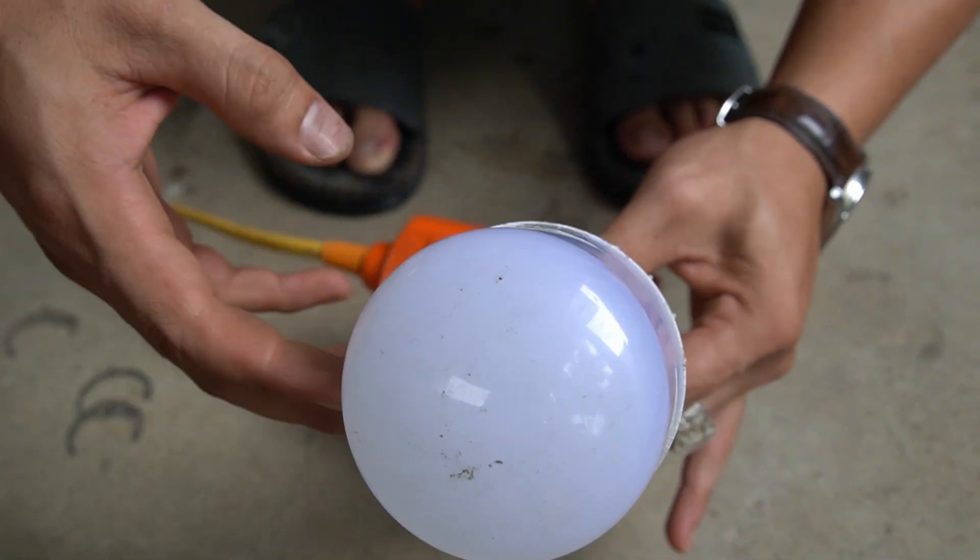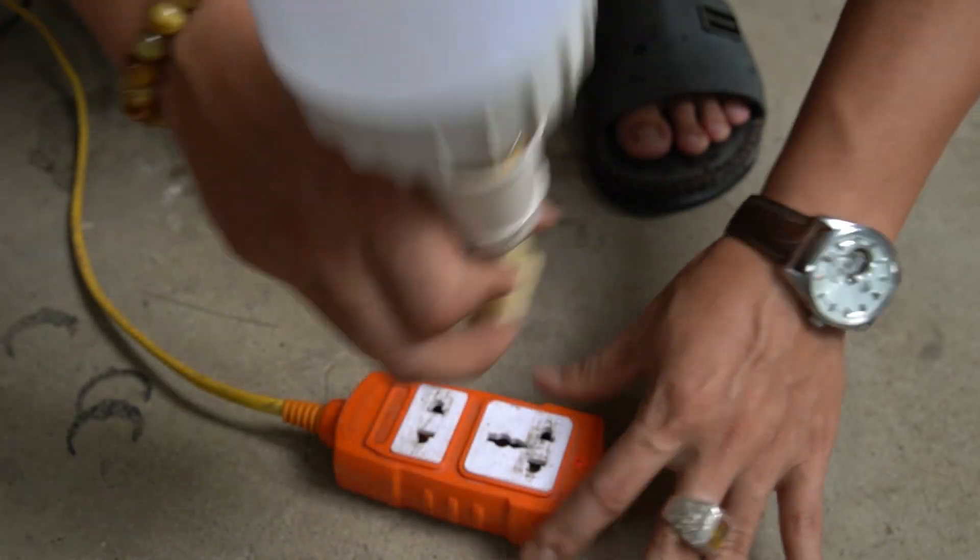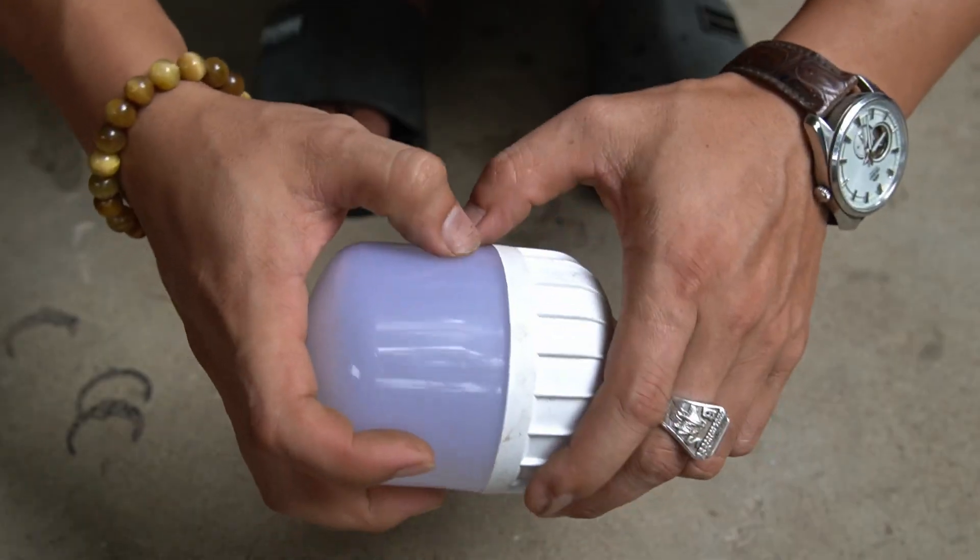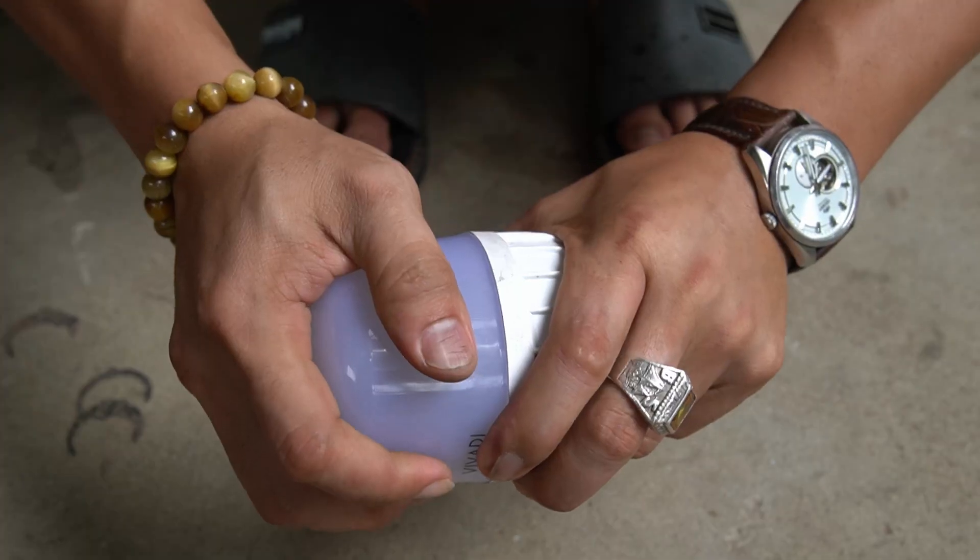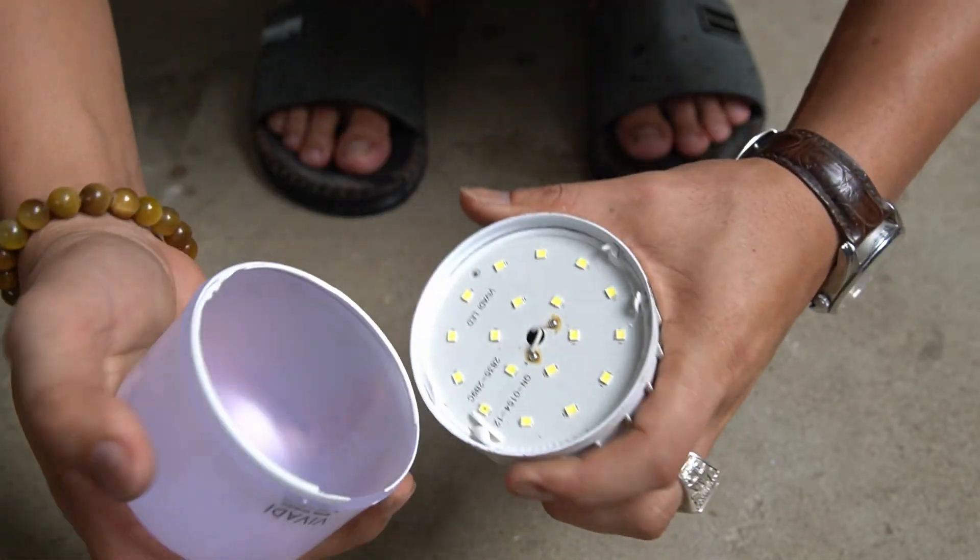Today I will show you how to make a fan from a broken light bulb. First you need to prepare a broken LED bulb.